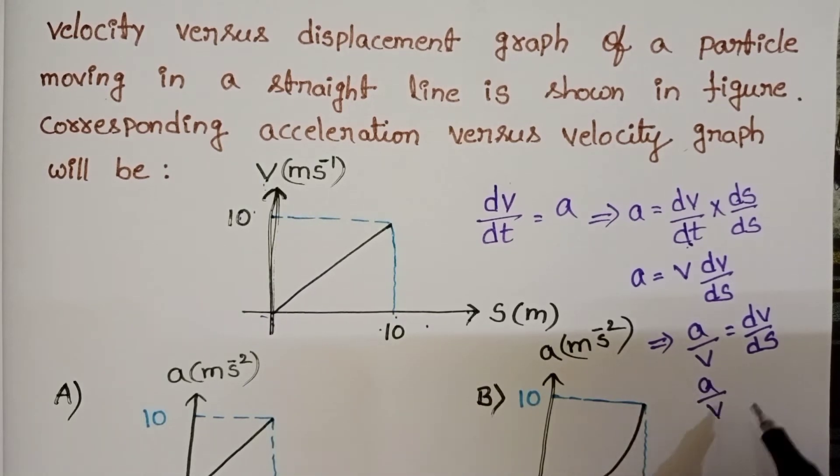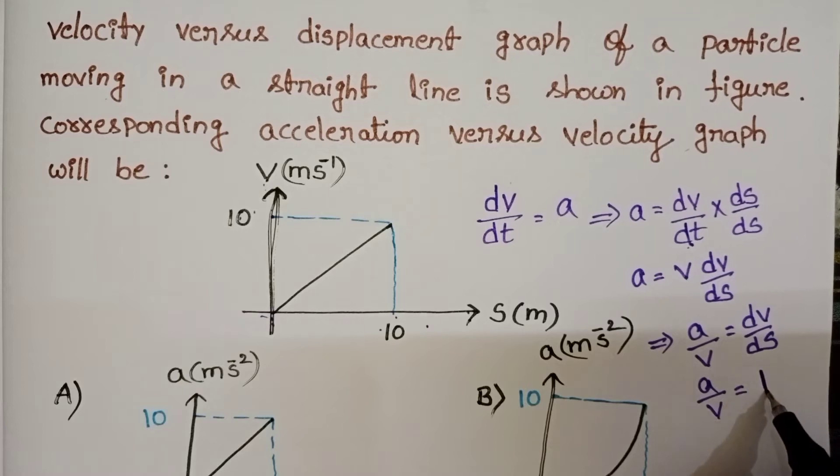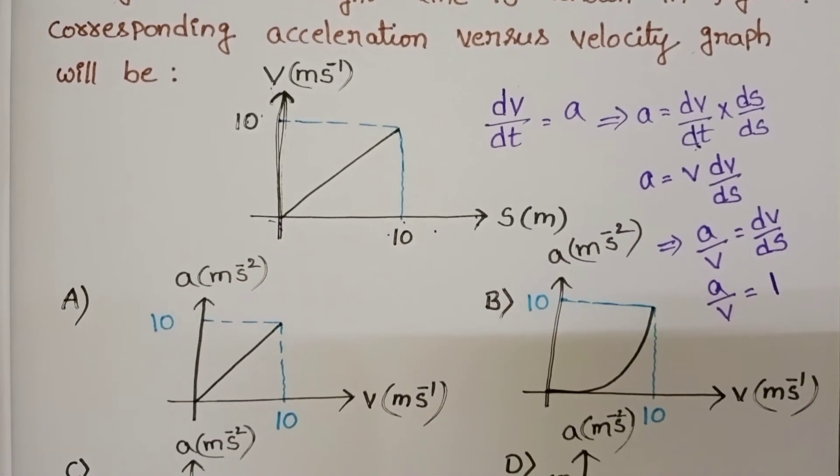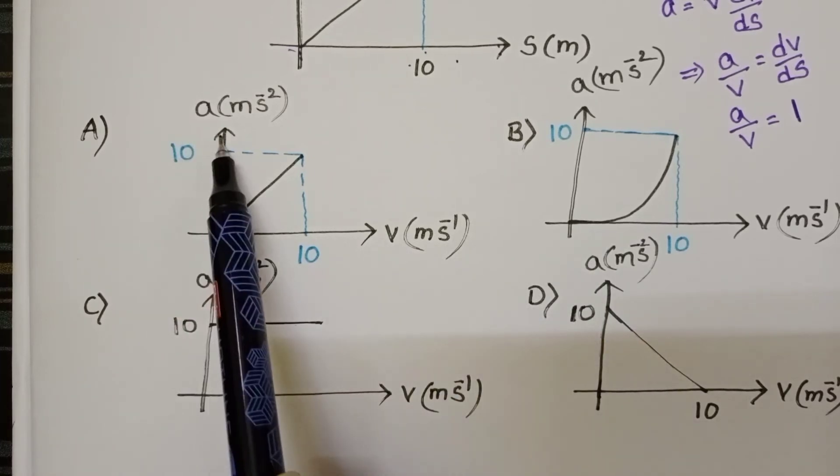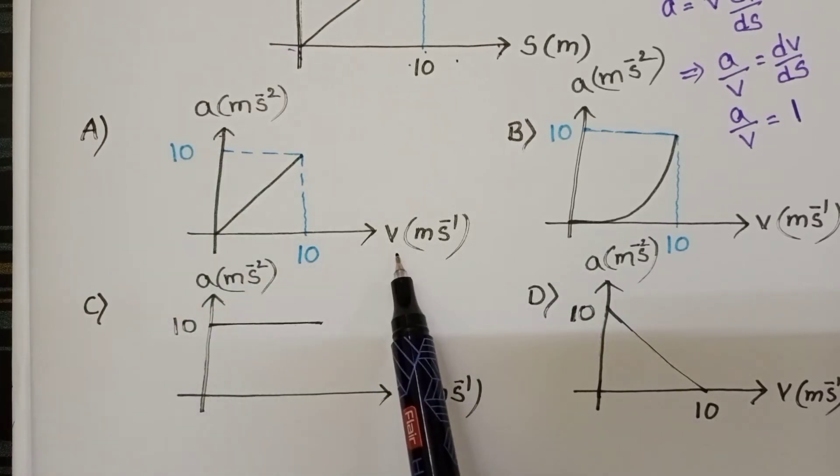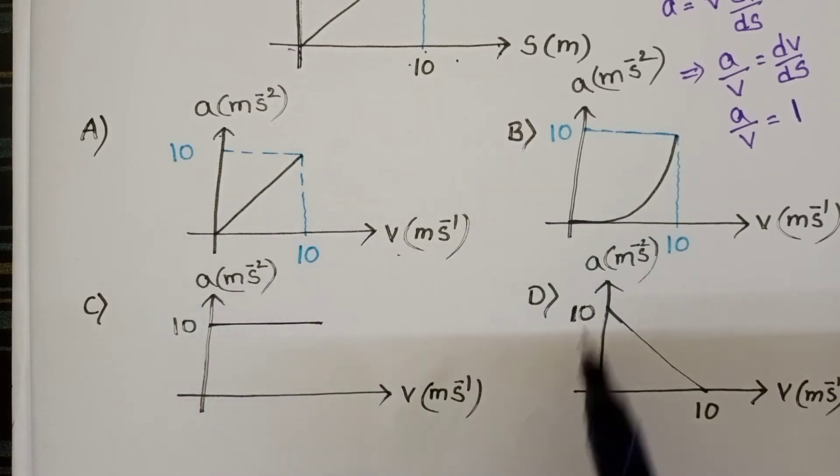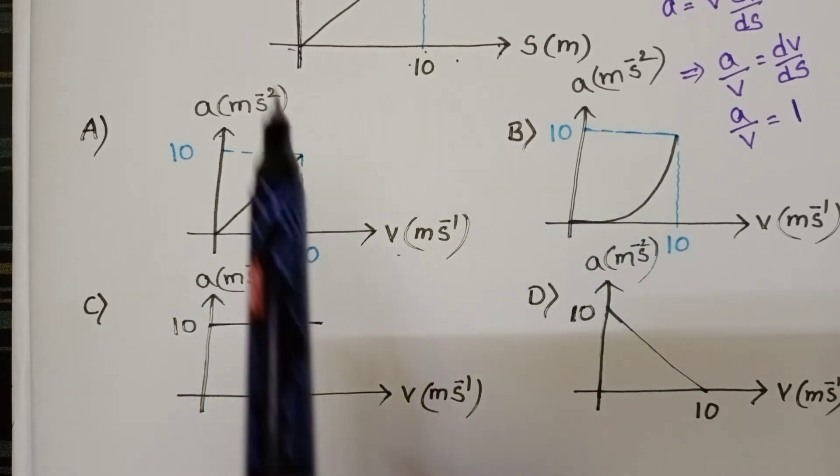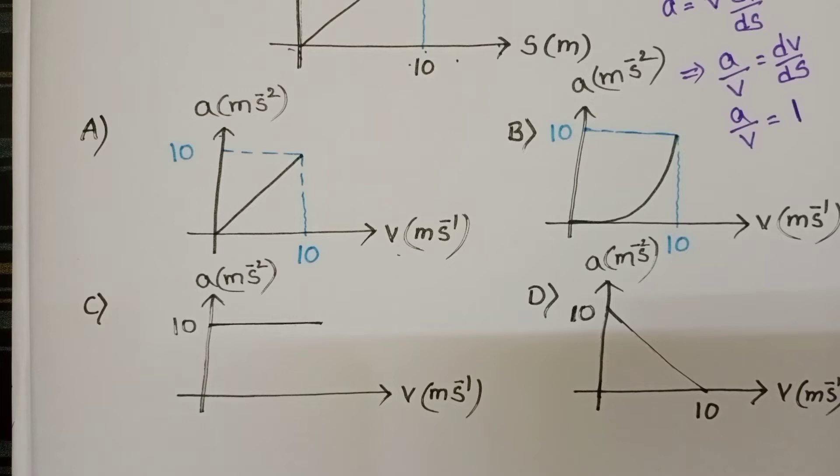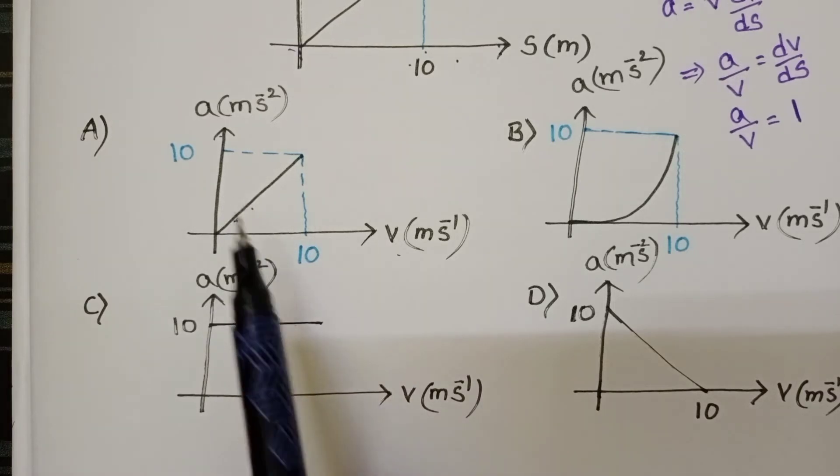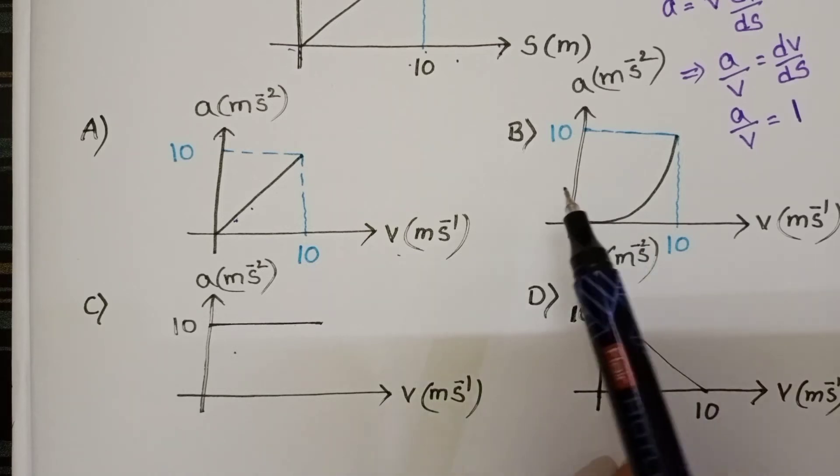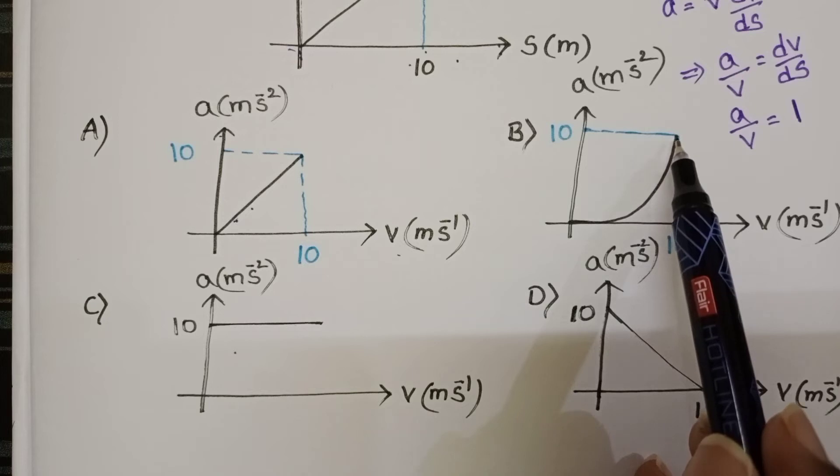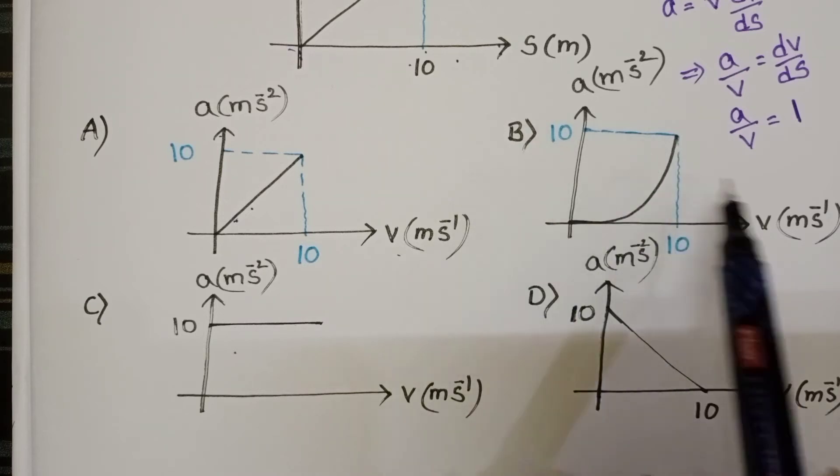a by v equals 1. Now check the given options. These 4 graphs show acceleration versus velocity. Which graph is suitable? In options A, C, and D, these are straight lines. But option B is not a straight line, it's a curve, so eliminate this graph.